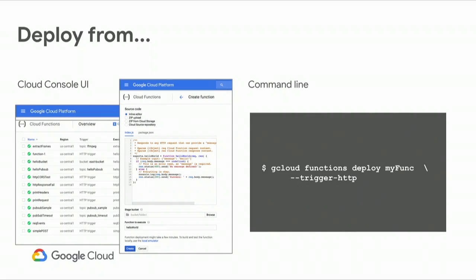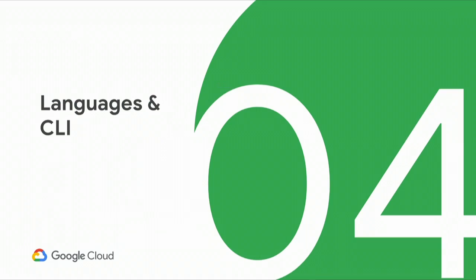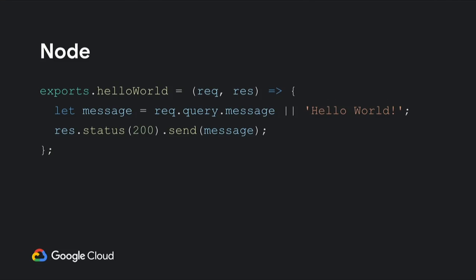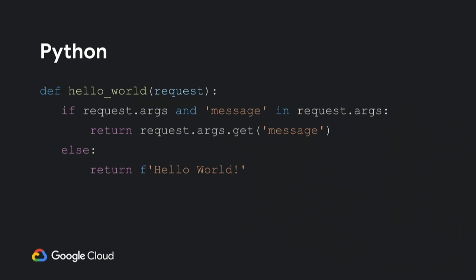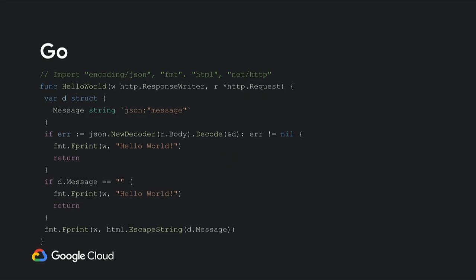You can deploy from the Cloud Console UI or from the command line. For Node, a Google Cloud Function looks like typical Node where you export a variable — this is just hello world — powered through Express 4, and you simply call res.status(200) and send the message. Python is similar using Flask, where you can parse the args and just return a string 'hello world'.